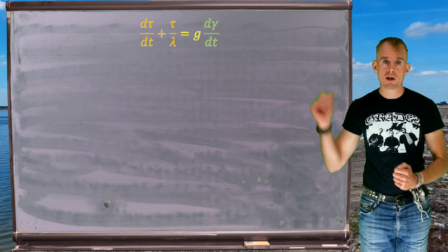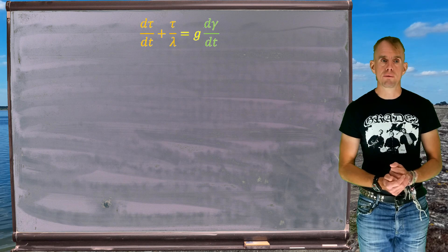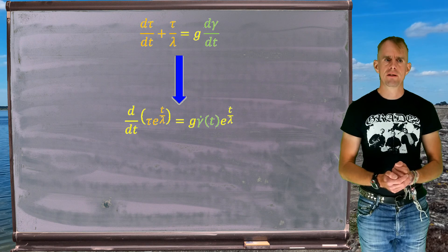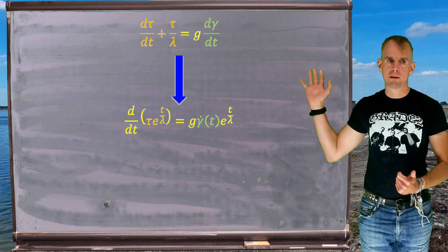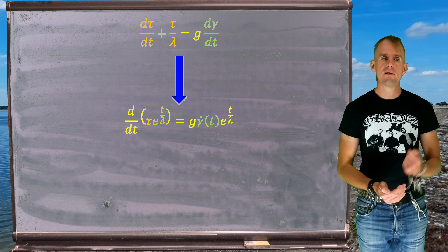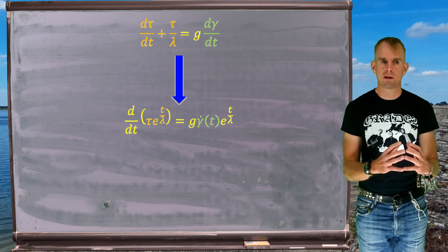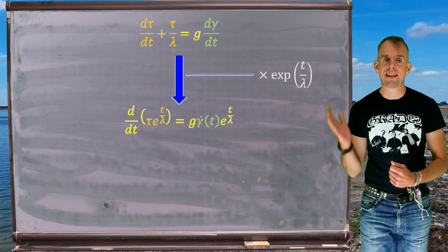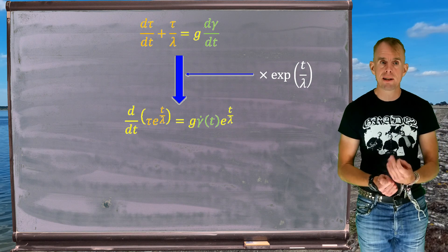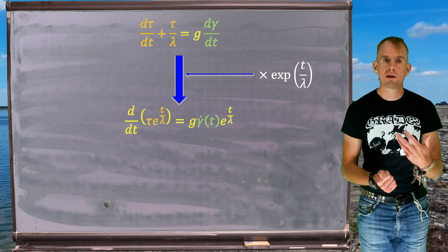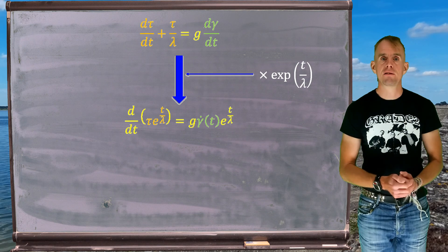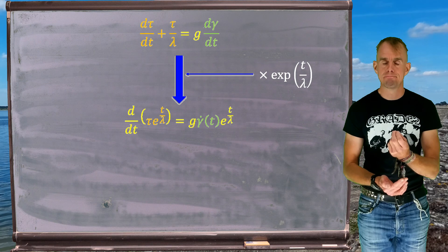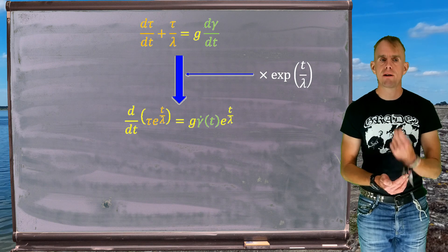To convert differential Maxwell to an integral form, we're going to do a couple of manipulations. We're going to convert this differential equation to the form now written on the blackboard, where on the left-hand side you have the differential of a product of terms. To achieve this, I've multiplied through by an integrating factor. The integrating factor I've chosen is e^(−t/λ), where t is time. But this is where we have to be very, very careful.